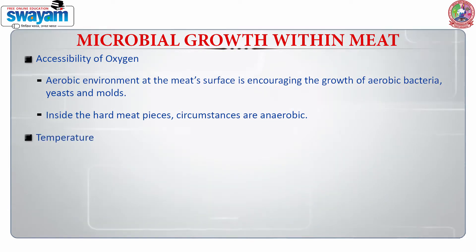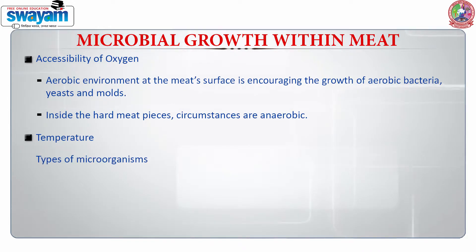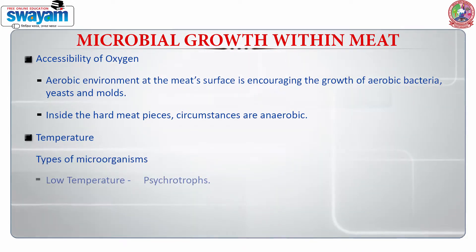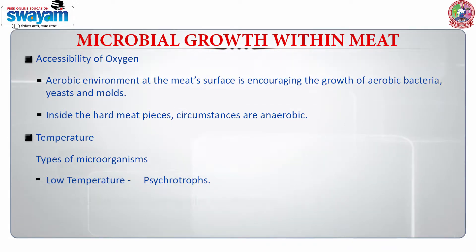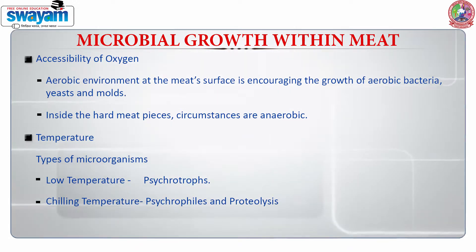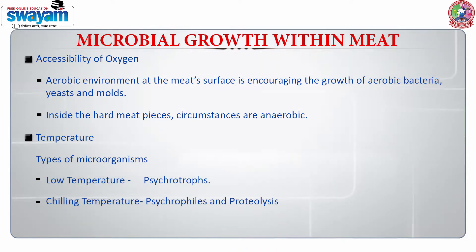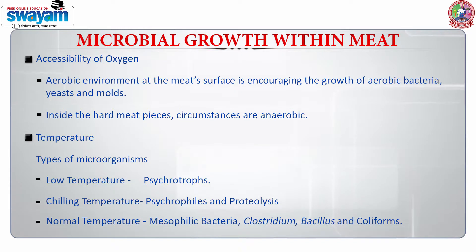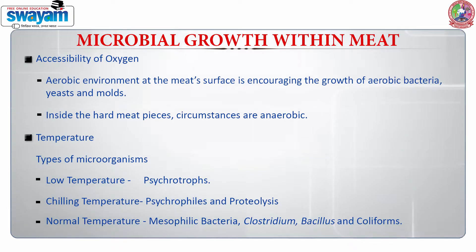Temperature also plays a very critical role in deciding the type of microorganisms which are going to grow. For example, low temperature favors the psychrotrophs whereas chilling temperatures promote psychrophiles, and most of the spoilage is proteolysis. If it is normal room temperature, then mesophilic bacteria are able to grow — for example, Clostridium, Bacillus and Coliforms.